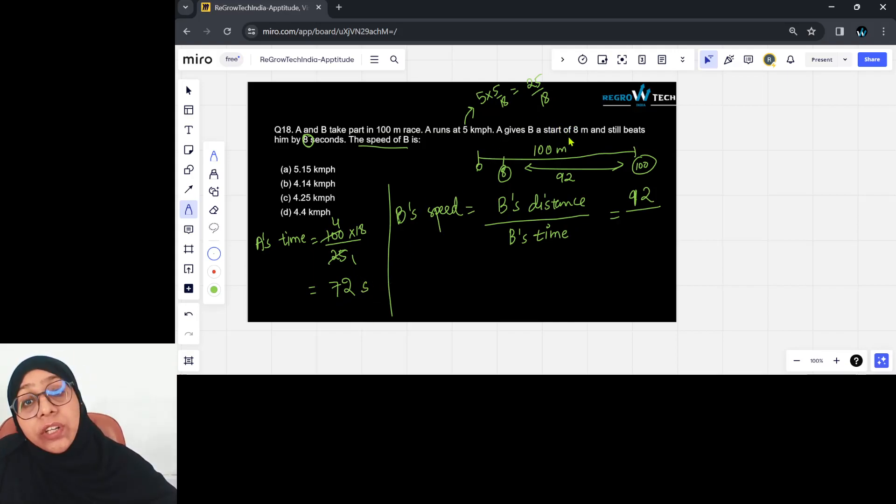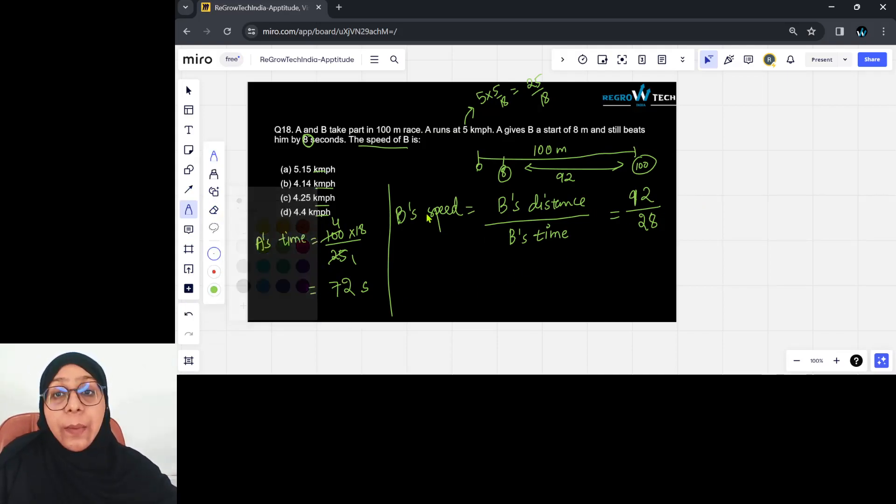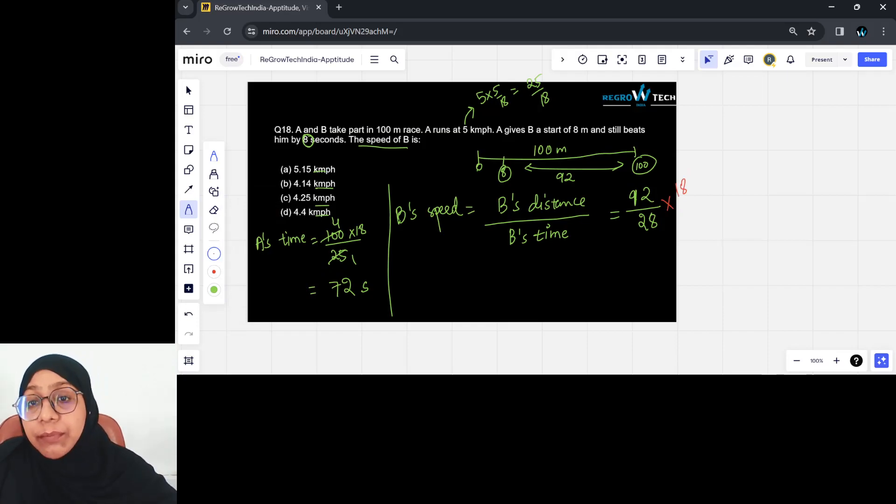Now we know according to the question B is taking 8 seconds more, meaning B's time is going to be 28. So if you can calculate this, we will get B's speed and this you will get it in meter per second. But the answer is in kilometer per hour. So to convert meter per second into kilometer per hour, all you need to do is multiply this with 18 by 5. Let's go ahead and solve that.